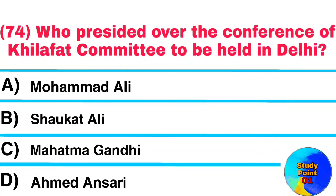Question No. 74. Who presided over the conference of the Khilafat Committee held in Delhi? Answer: Mahatma Gandhi.